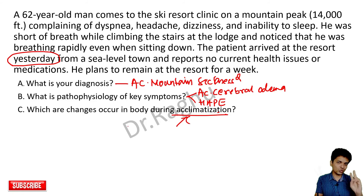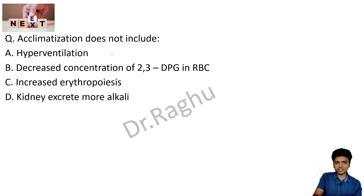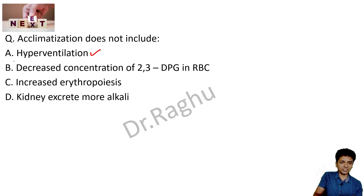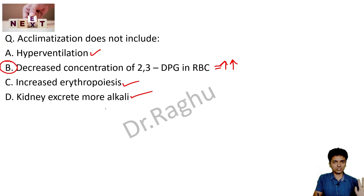Now two multiple choice questions recently asked in NEET PG and NEXT. First: acclimatization does not include which of the following? Hyperventilation — yes, it is included. Decrease in concentration of 2,3-DPG in RBCs — no, this is incorrect because DPG concentration rises during acclimatization. Increased erythropoiesis — yes, included. Kidneys excreting more alkali — yes, that's the compensatory mechanism for respiratory alkalosis.